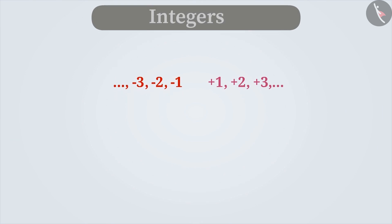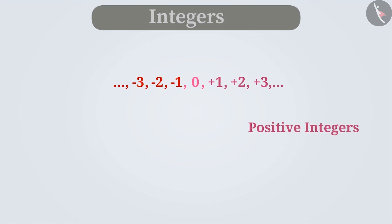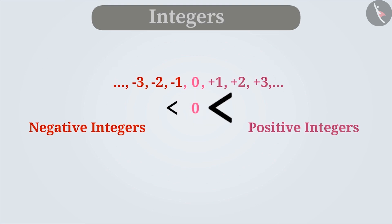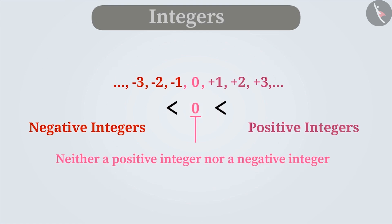A collection of positive numbers, negative numbers, and 0 together is known as integers. In this collection, numbers like 1, 2, 3, etc. without any sign are said to be positive integers, whereas minus 1, minus 2, minus 3, etc., which have a negative sign, are said to be negative integers. The value of negative integers is less than 0, whereas the value of positive integers is greater than 0. 0 is neither positive nor negative.